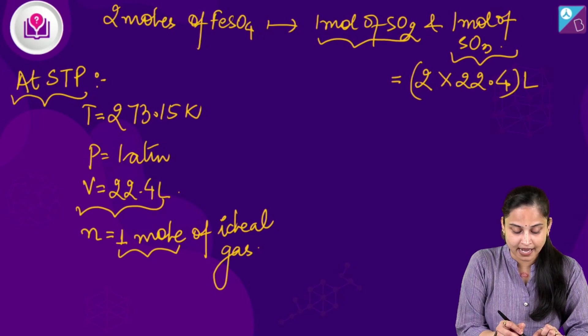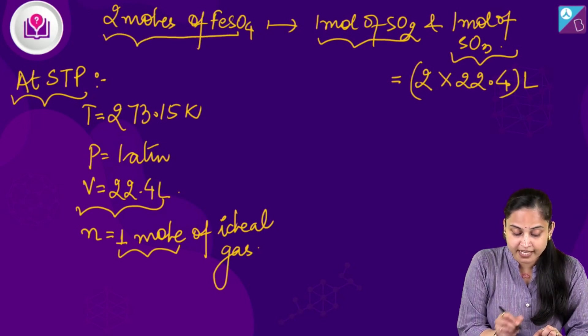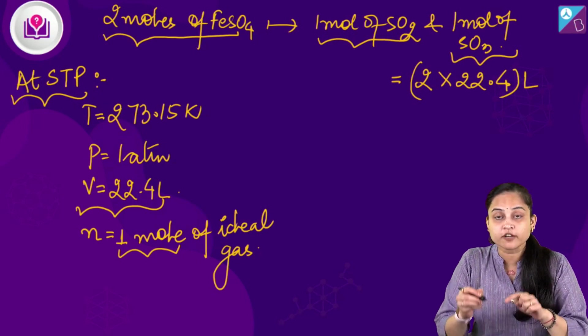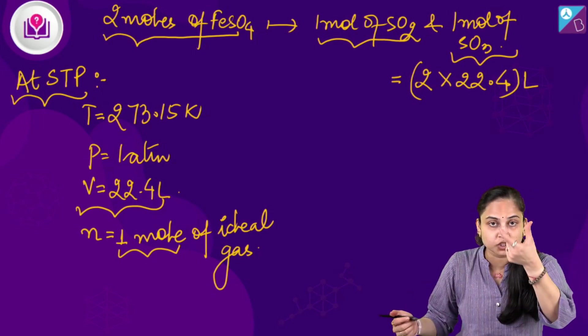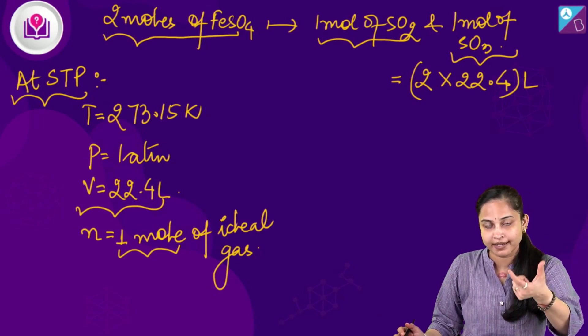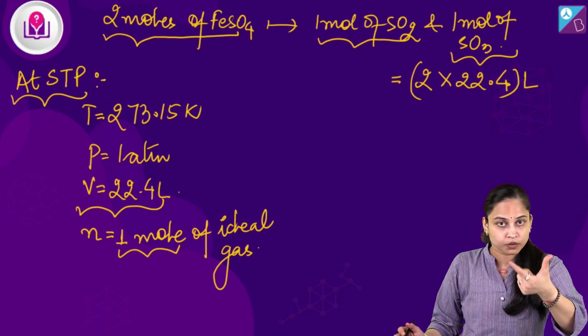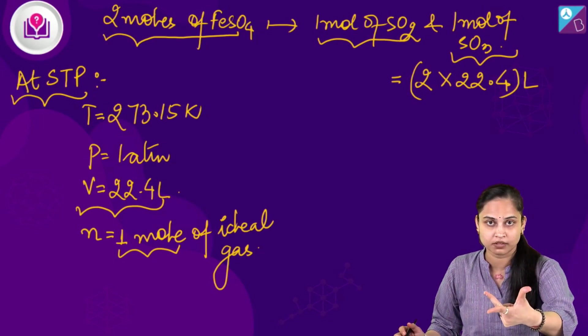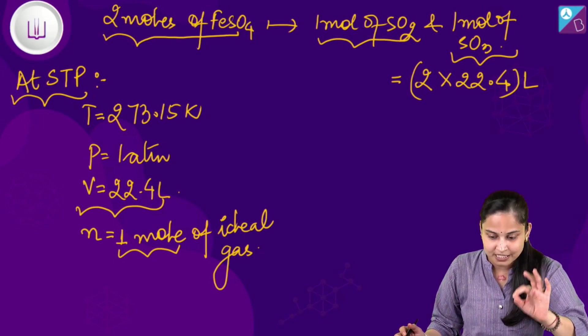And over here, we can say that 2 moles of FeSO₄ basically gives us 2 into 22.4 litres of the total gas I am talking about. Volume occupied by the total gas and those total gases includes SO₂ and SO₃.